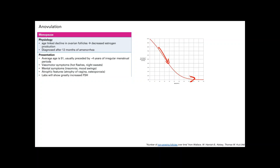And then labs will show a greatly increased FSH. Again, this relates to estrogen. All of this is due to estrogen. The FSH, estrogen normally blocks it. So if you run out of estrogen, then FSH goes up.